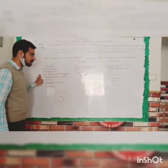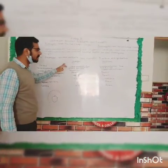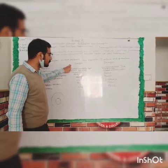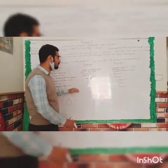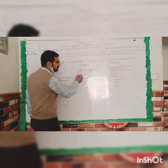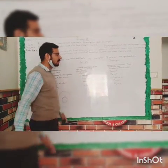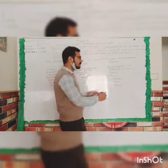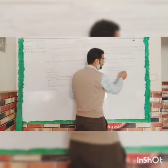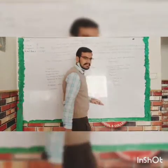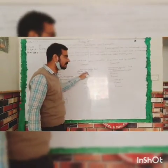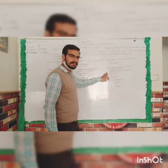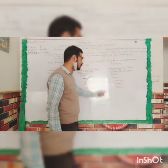Now we look at the number of cells. Prokaryotic cells are unicellular — they consist of a single cell. Eukaryotic cells can be multicellular, meaning they are made up of many cells.